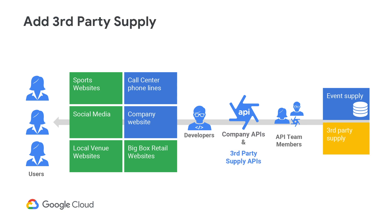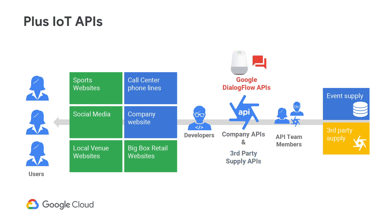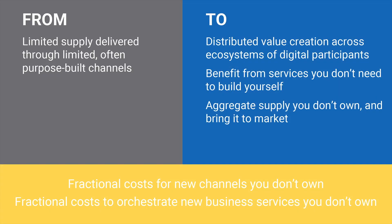Due to the high demand, the company found that they could engage additional third-party supply to help meet the demand. Demand continued to grow with IoT devices coming into the picture. Consumers wanted to search for events and order tickets via voice-activated devices such as the Google Home Assistant, and thus an API product ecosystem was born — with demand and supply running through the API product ecosystem powered by the Google Apigee platform. The company grew from a limited supply delivered through a closed private channel to a vibrant marketplace with an ecosystem of API products with third-party suppliers, creating services the company didn't need to build, at little cost.